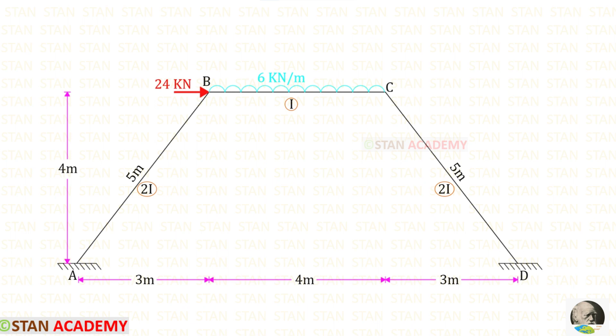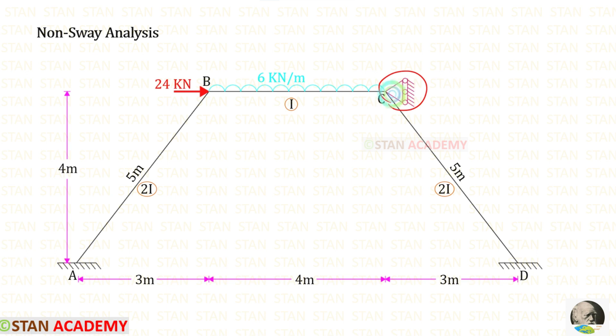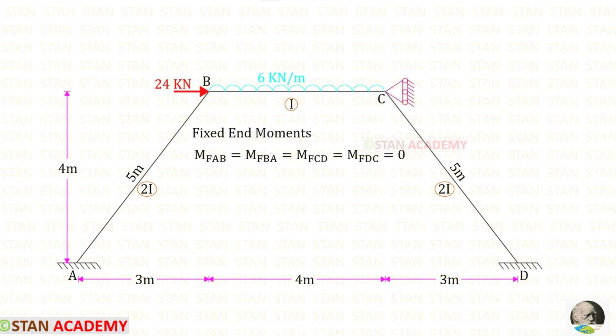Since this frame is subjected to sway, we have to do the analysis two times: first the non-sway analysis and then the sway analysis. In the non-sway analysis, we assume that at joint C there is a roller support which prevents the sway. Now let us find the fixed end moments.